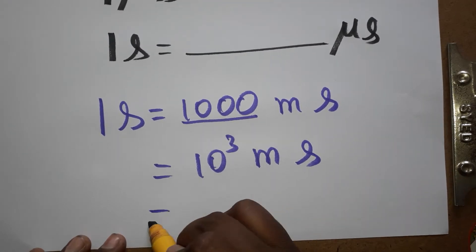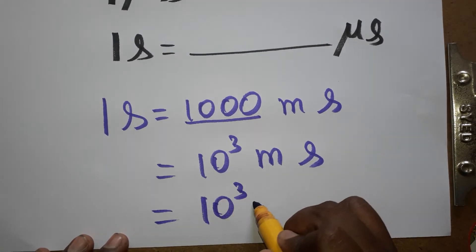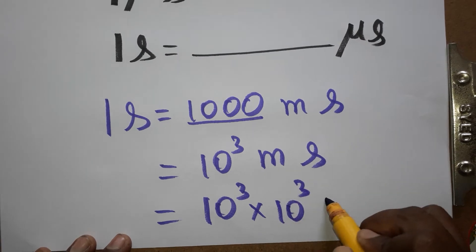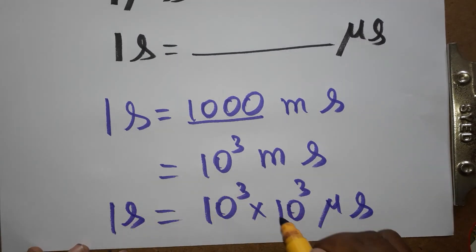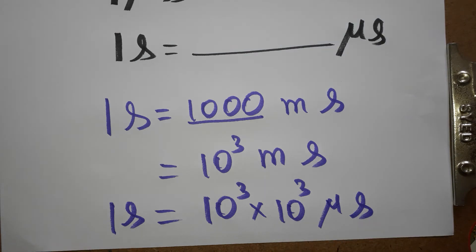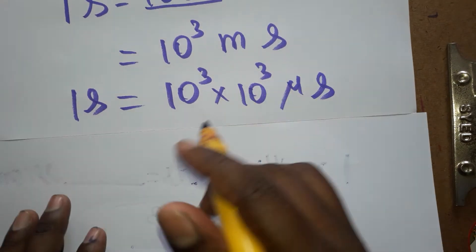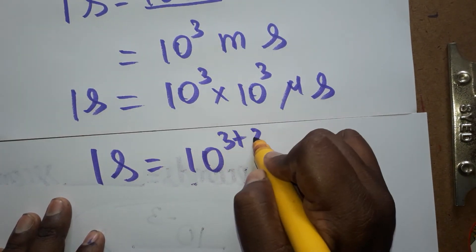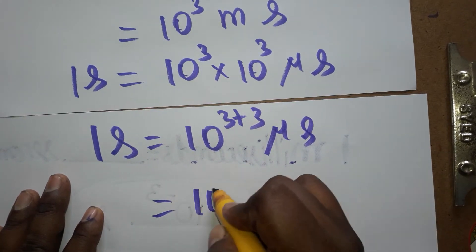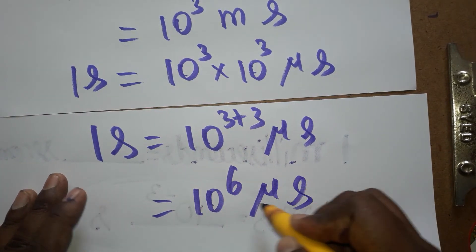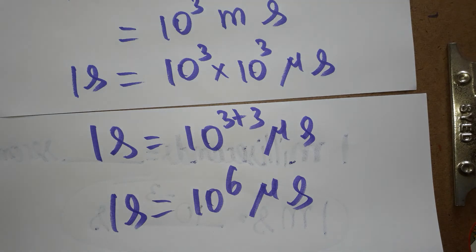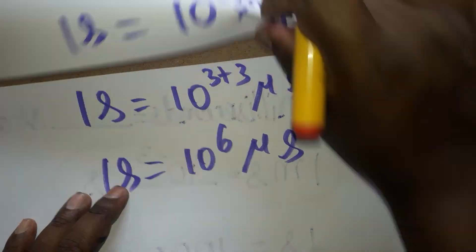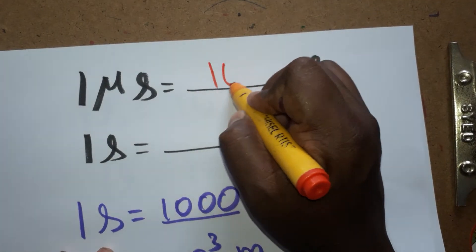1 millisecond is 1000 microseconds, so that is 10 power 3. Combining: 1 second equals 10 power 3 into 10 power 3 microseconds. Adding the powers, 3 plus 3 equals 6, so 1 second is equal to 10 power 6 microseconds.